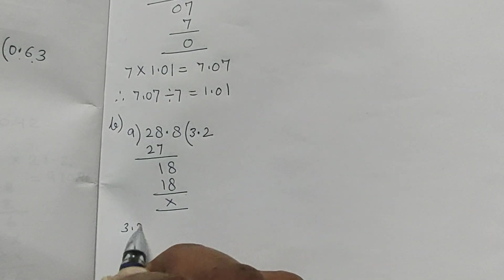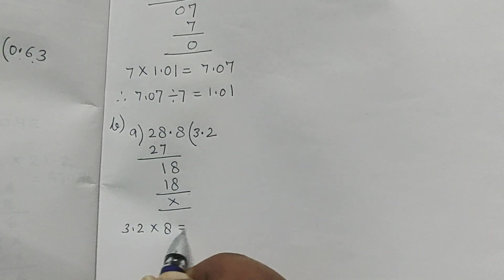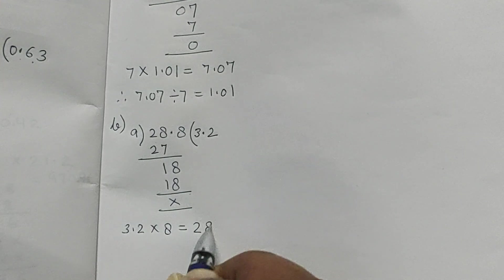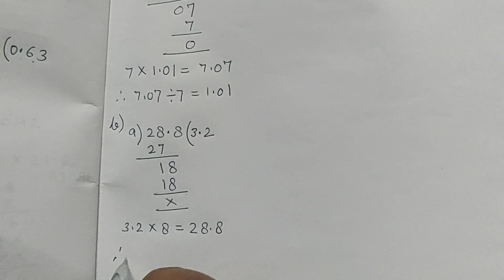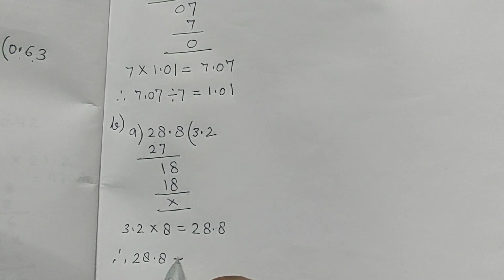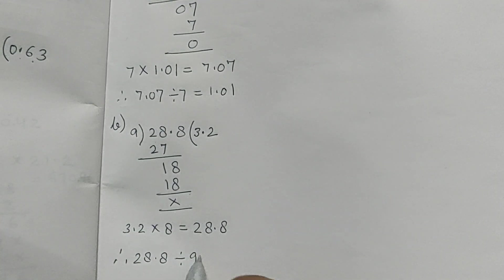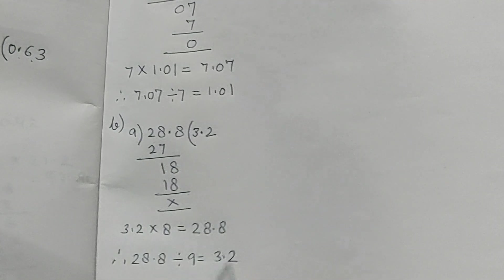Now 3.2 multiplied by 9 is equal to 28.8. Therefore, 28.8 divided by 9 is equal to 3.2.